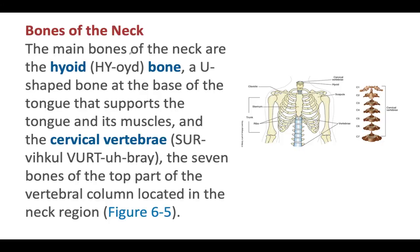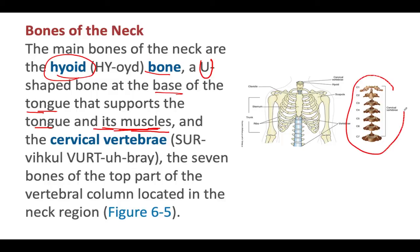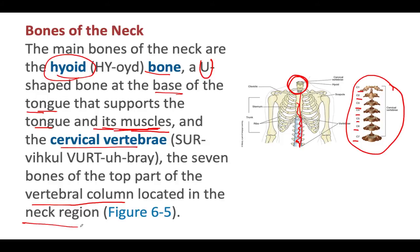The main bones of the neck are the hyoid bone — a U-shaped bone at the base of the tongue that supports the tongue and its muscles — and the cervical vertebrae. The cervical vertebrae are the seven bones of the top part of the vertebral column. We have the full vertebral column here, but the top portion, the neck region, has these small segments that form the neck. It is the top part of the vertebral column, located in the neck region.